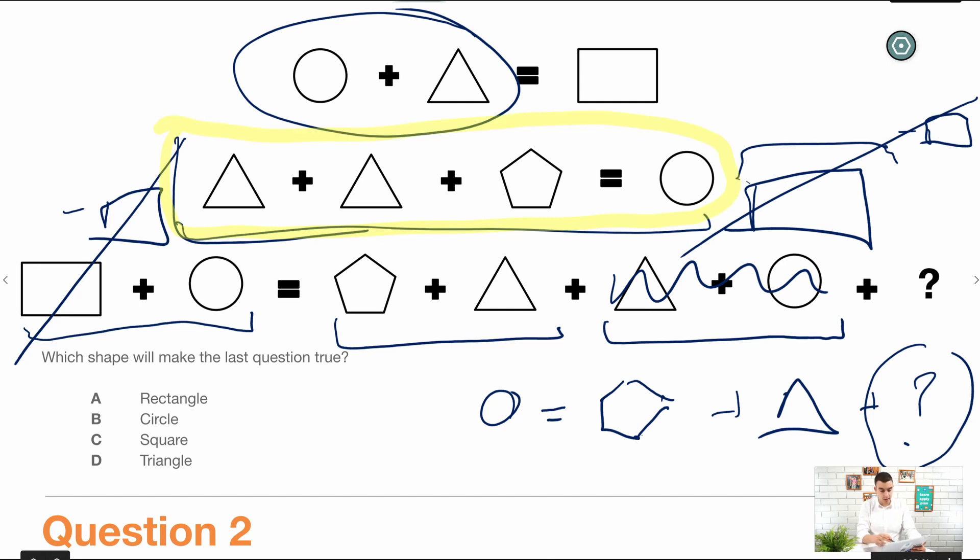You can see that circle equals pentagon, yep we've got that, plus triangle, yep, plus another triangle. So we know that mystery object is a triangle and we pick D which is the correct answer.